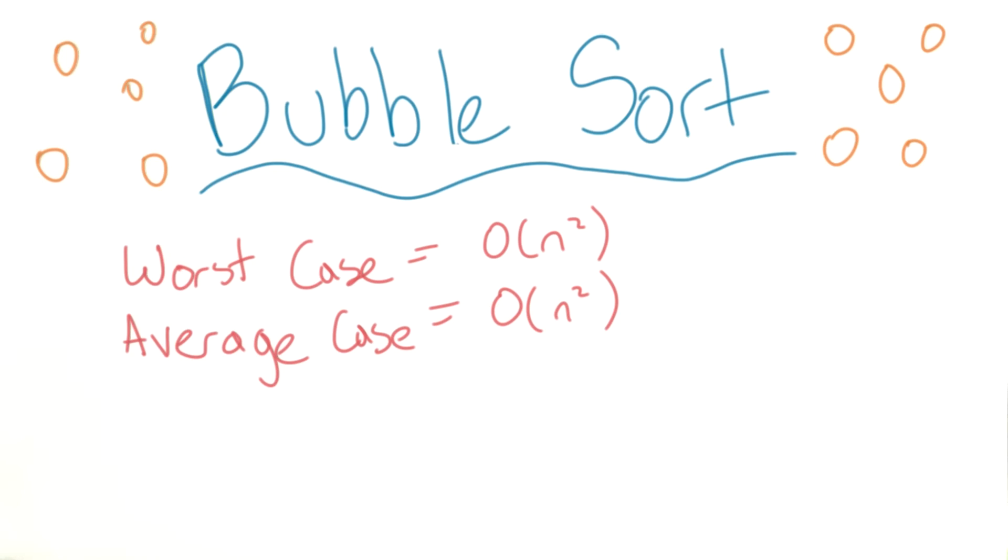I have a couple quick notes for you. Okay, so we understand why the worst case and the average case are going to be big O of n squared. However, the best case is actually going to be big O of n.